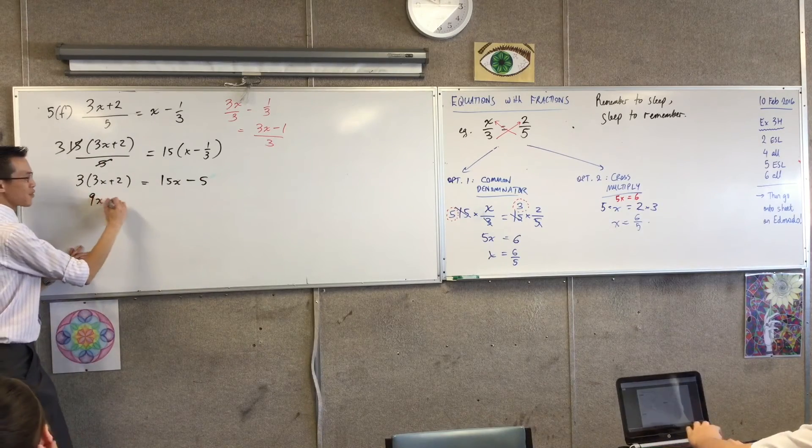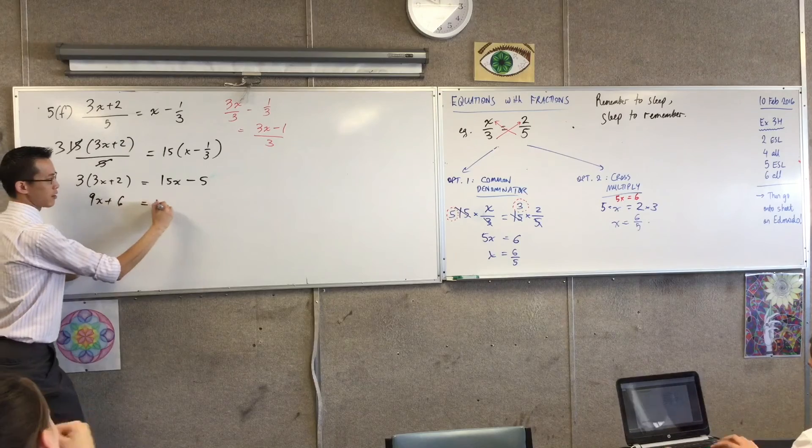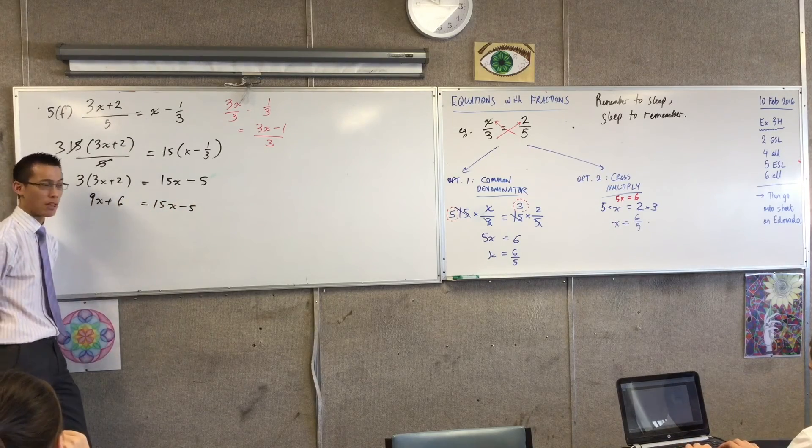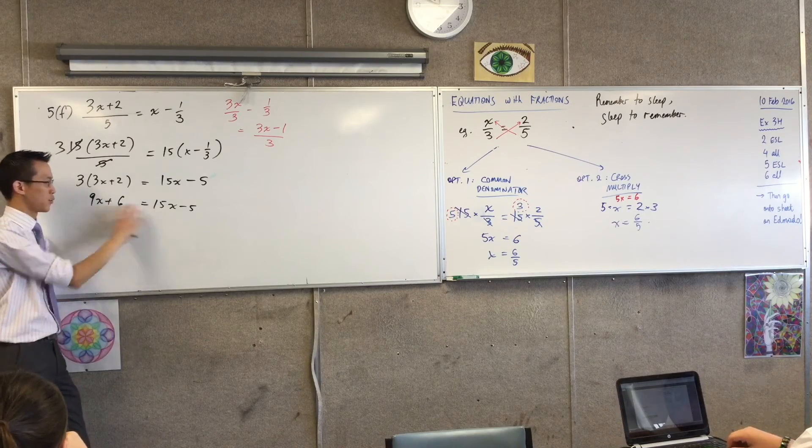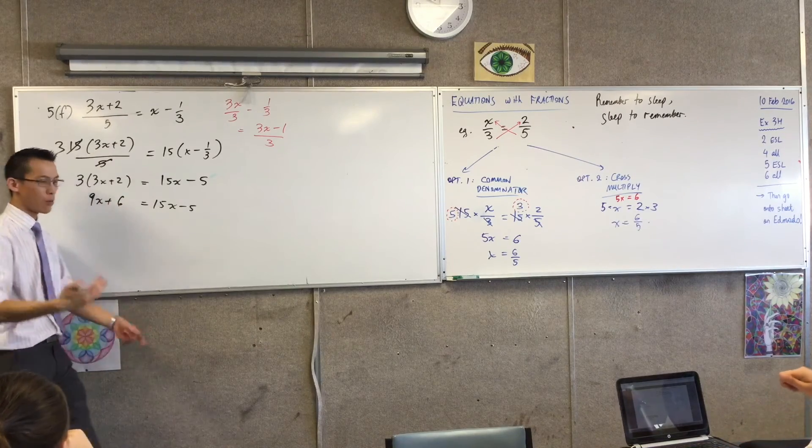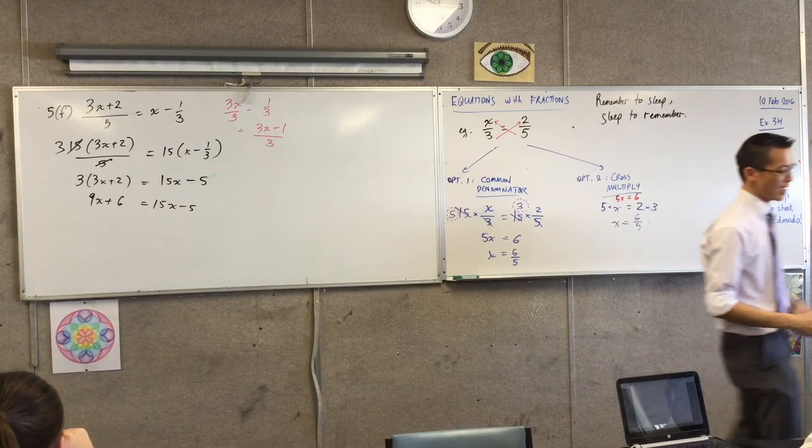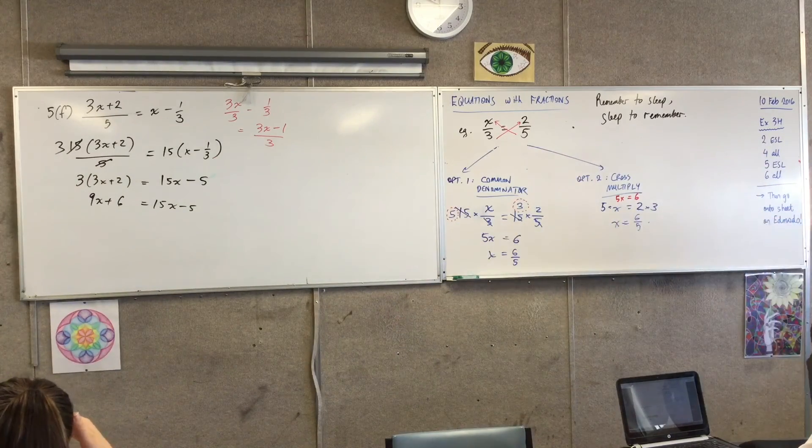Then I just expand this guy, and I don't even really need to finish this, I don't think. I reckon you could probably get the rest of it on your own. Getting to this point was the hard part. Now we just want to collect like terms, and we'll get a value out for x. So I'll leave that on the board. You can have a crack at it. If you really want me to finish it off, I will, but I think you guys can do that.